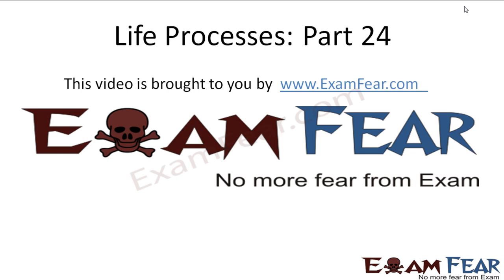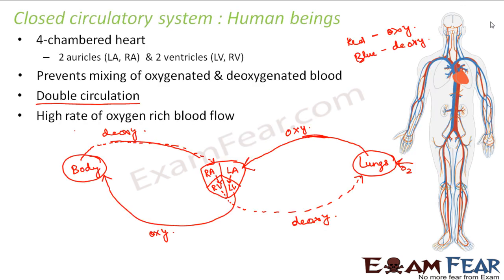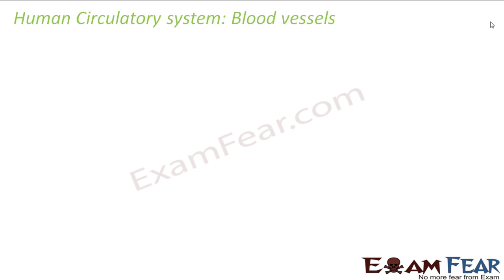Hello friends, this video on life processes part 24 is brought to you by examfear.com — no more fear from exam. Oxygen-rich blood flow actually enables the mammals and birds to maintain high activity levels. So now that we have spoken about how blood circulation takes place in human beings, in the human circulatory system, other than just the flow, there are many other things which are involved.